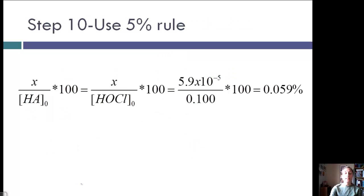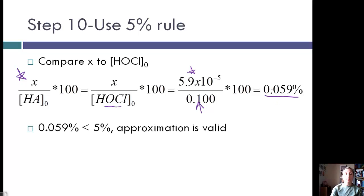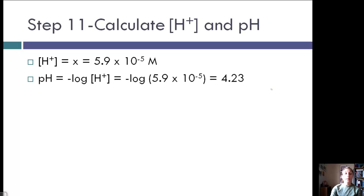Step ten: use the 5% rule. We compare X to the initial concentration of HOCl. Our X value divided by the initial concentration of HOCl times 100 gives us 0.059%. Since 0.059% is less than 5%, our approximation is valid, and we can use 5.9×10⁻⁵ for X. Last step — calculate concentration of H⁺ and the pH. Since H⁺ equals X, it equals 5.9×10⁻⁵. pH equals negative log of H⁺, which is the negative log of 5.9×10⁻⁵, which equals 4.23.